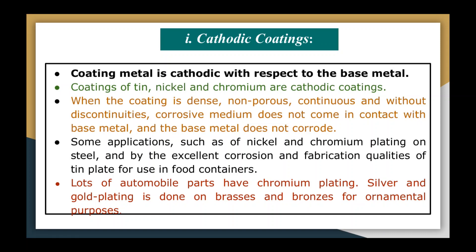Lots of automobile parts have cathodic coatings like chromium plating. Silver and gold plating is also done on brass and bronze for ornamental purposes.